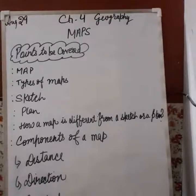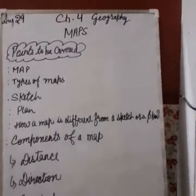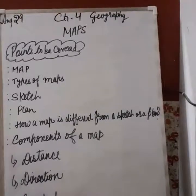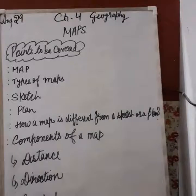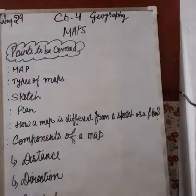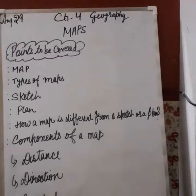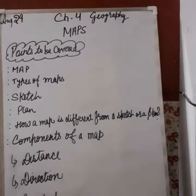When we talk about distance, we talk in terms of scale. Scale is a ratio between the actual distance on the ground and the distance shown on the map. Scale is very important for the map to be realistic and accurate. For example, if the distance between your school and your home is 10 km, and you show this 10 km as 2 cm on a map, then 1 cm on the map equals 5 km on the ground. So if you know the scale, you can calculate the distance between two places on a map.